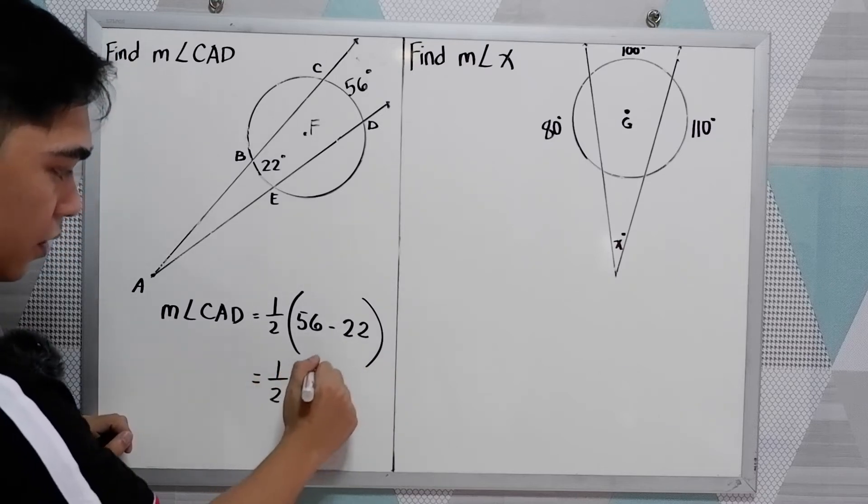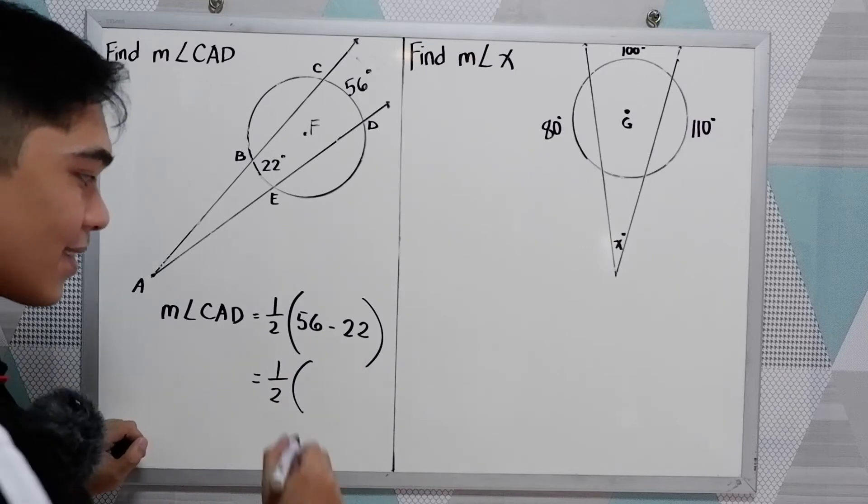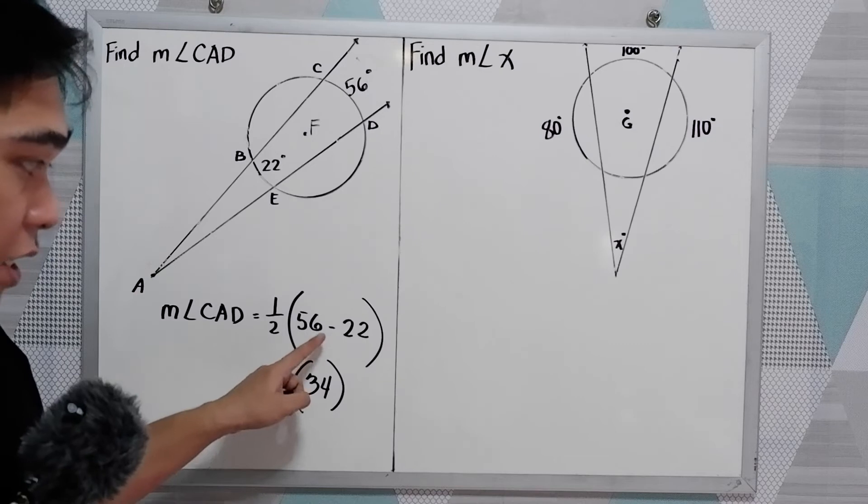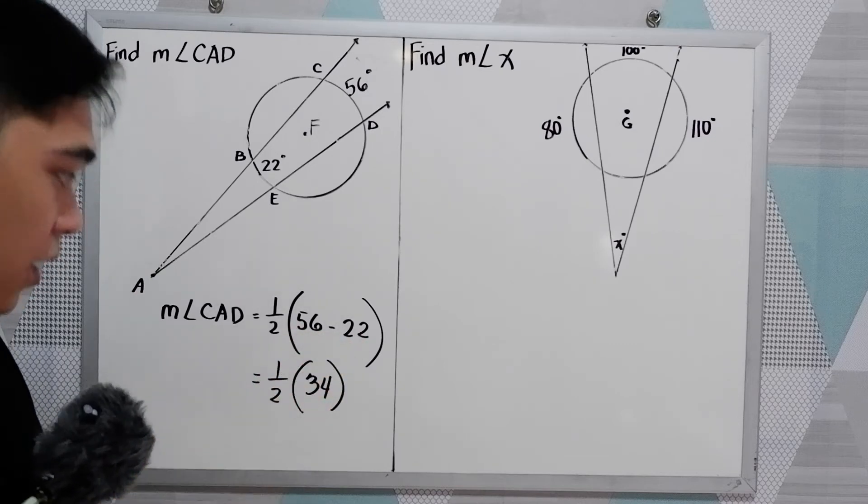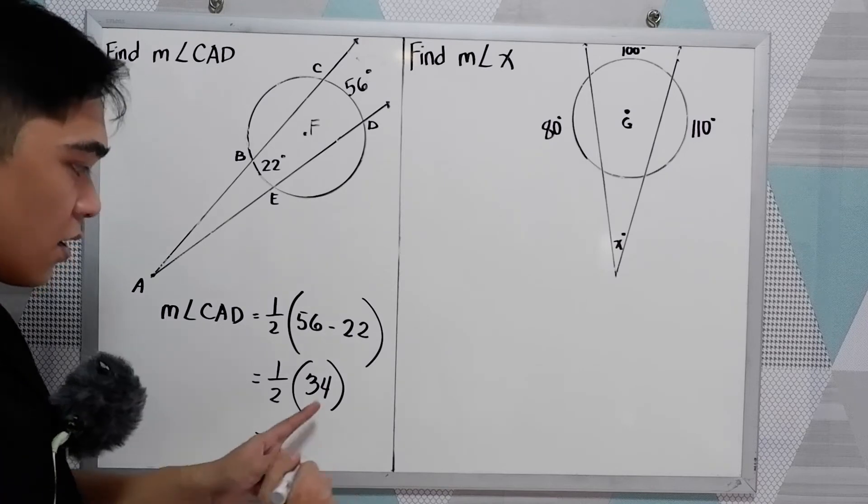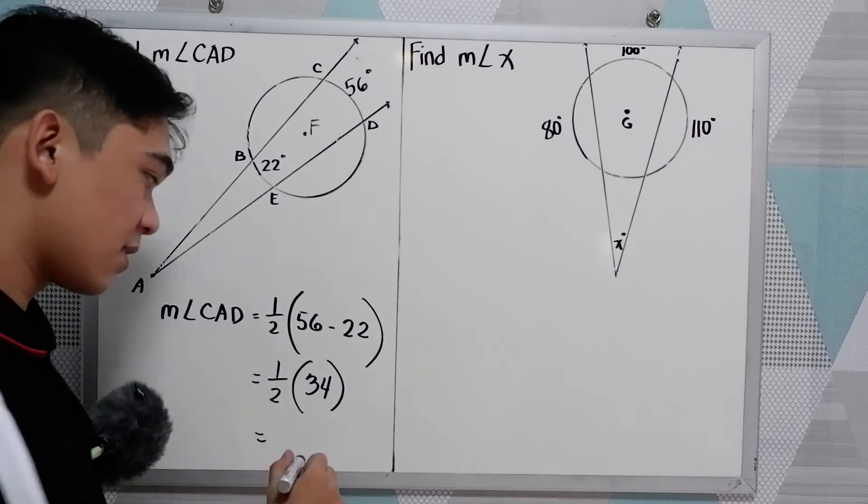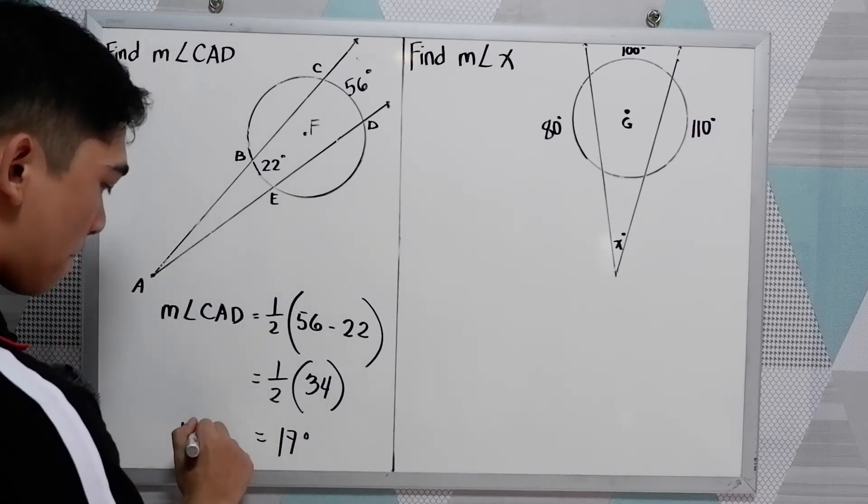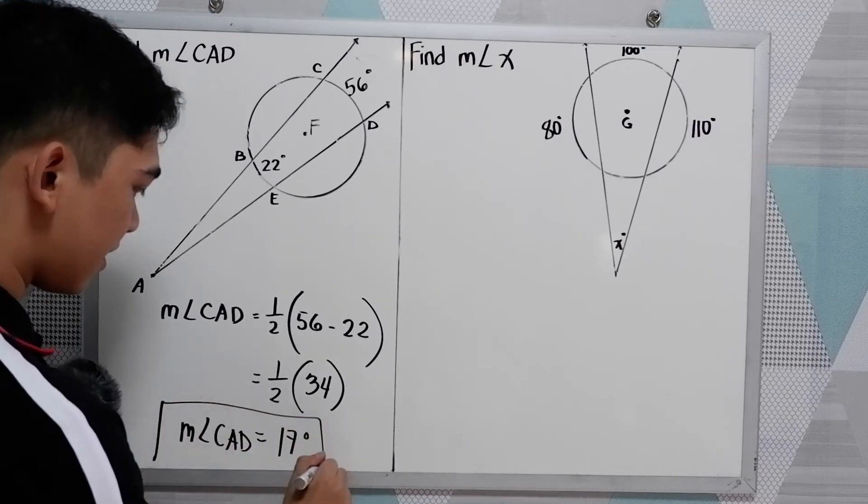So one half, 56 minus 22, that is 34. Right, 56 minus 22, so 6 minus 2 is 4, 5 minus 2 is 3. So we have 34 divided by 2, that is 17. So 17 degrees. Measure of angle CAD is 17 degrees.